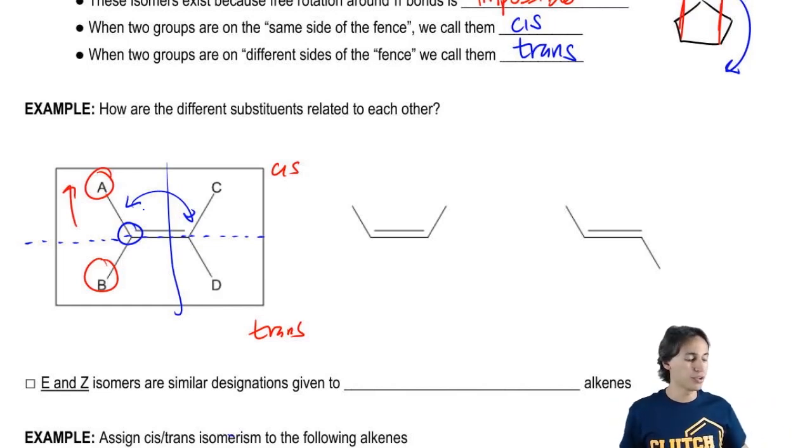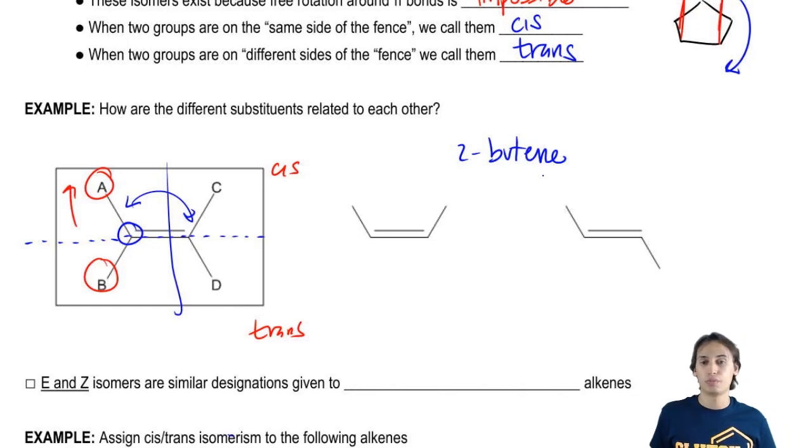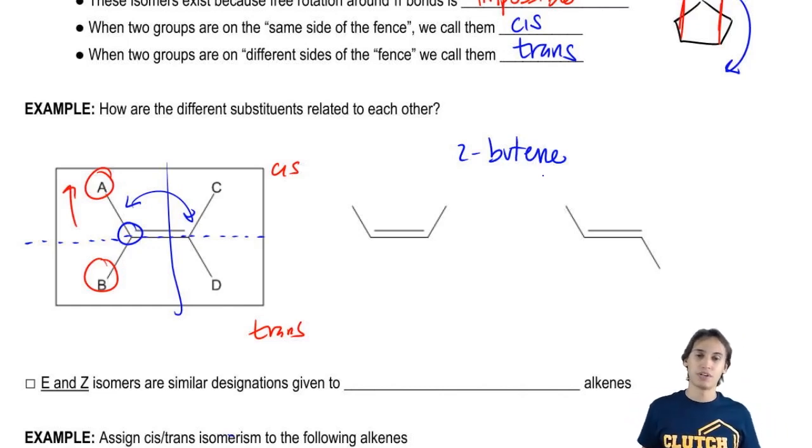So here I've got two different versions of 2-butene. When I say that, you shouldn't be shocked. You should know what I'm talking about because that means that's a butane with a double bond in the two position. Easy. But these are not both the same molecule. In fact, they're going to have different physical properties. They're going to behave differently and stuff like that.